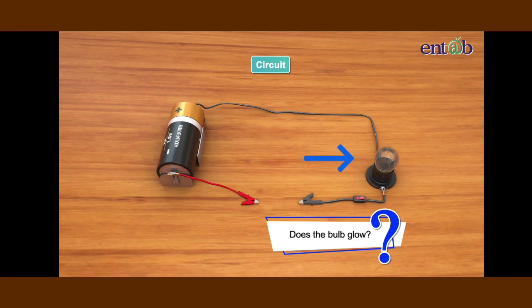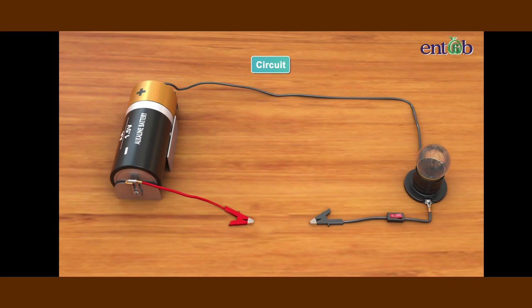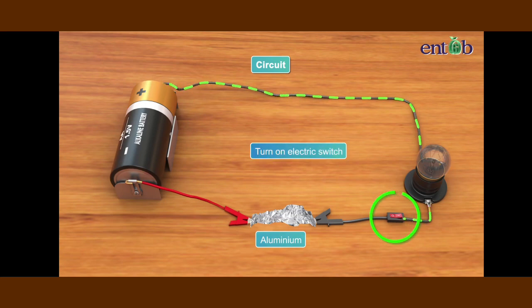Does the bulb glow? No, it doesn't. It does not glow as there is a gap between the two crocodile clips. Hence the circuit is not complete and the current does not flow through the circuit.